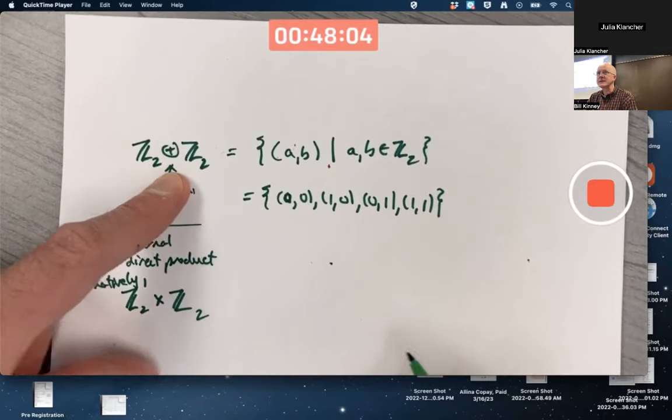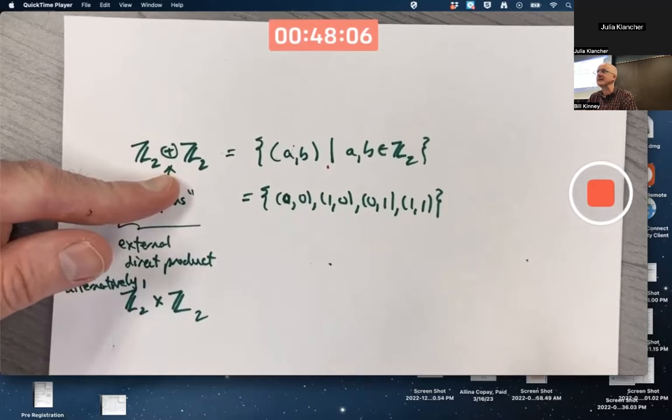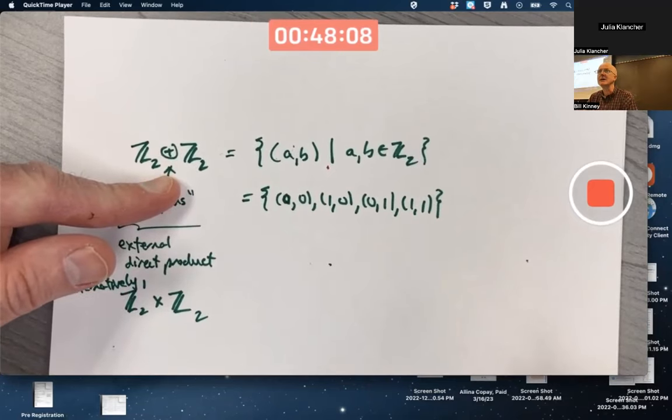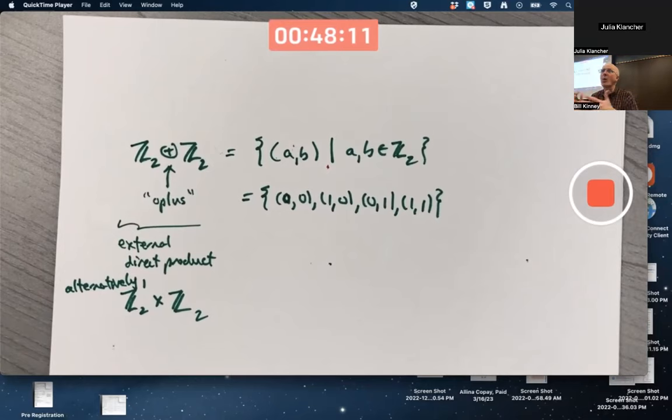Now, both groups here are Z2, and the operation is the same in this case, addition mod 2. But in general, they could be different operations. One could be a multiplication, and one could be an addition. Weird things like that can happen.